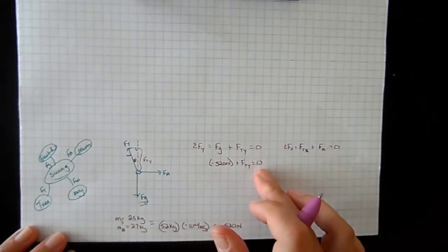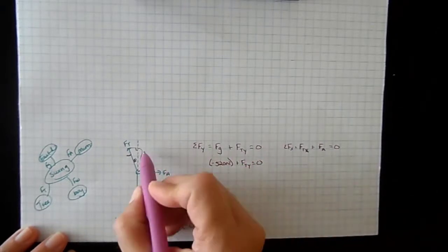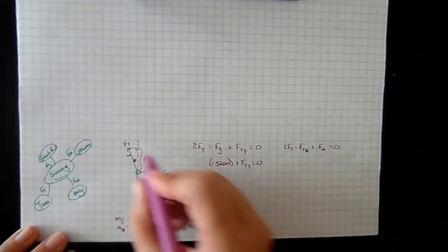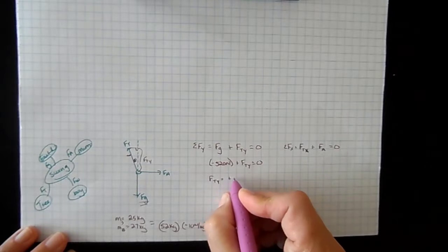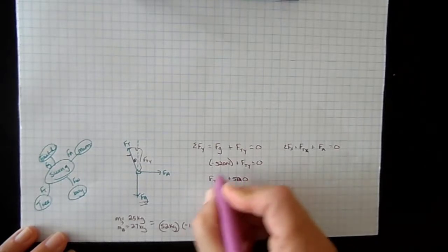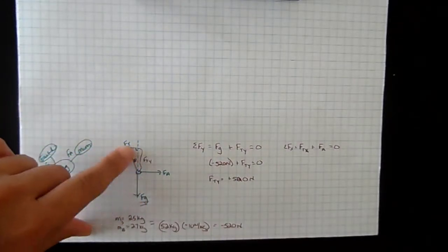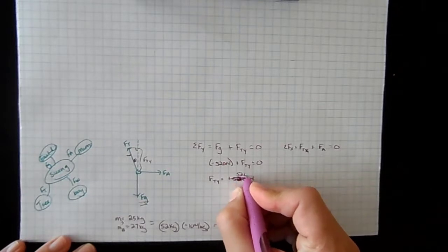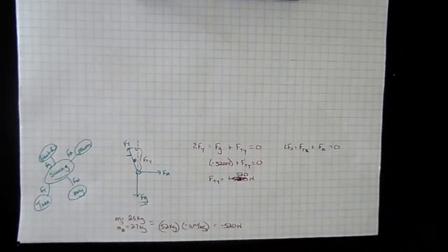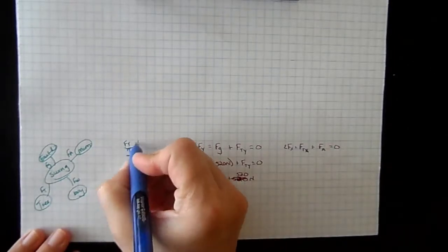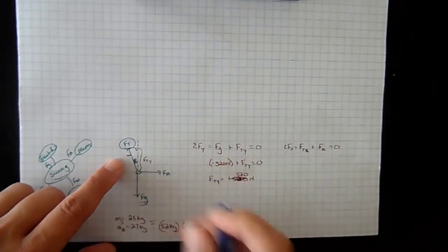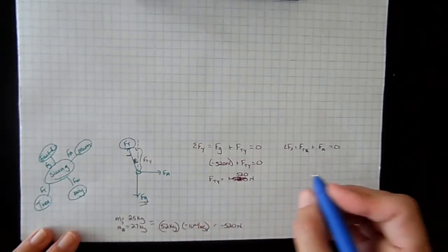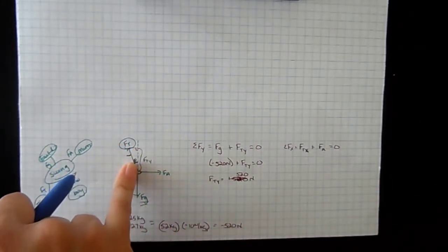We take 52 kilograms times negative 10 newtons per kilogram to get negative 520 newtons as our force of gravity. Plugging back in: negative 520 newtons plus the y component of tension equals zero, so the y component of the tension force is 520 newtons. Now we know this angle and one side of our triangle — the y component.